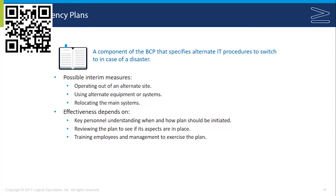The effectiveness of this contingency plan depends on three main things: key personnel understanding when and how the plan should be implemented; review of the plan to verify that various aspects are in place, including checking on alternate sites; and training of employees and management so they can execute the plan efficiently.